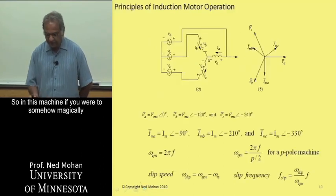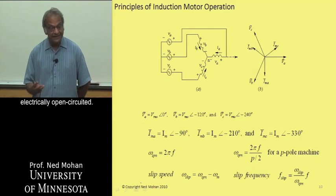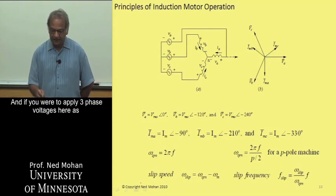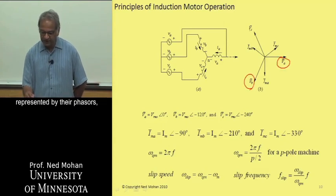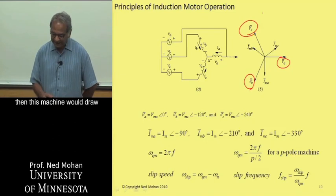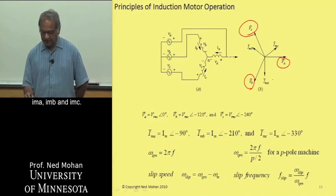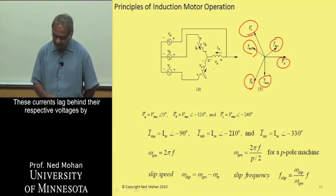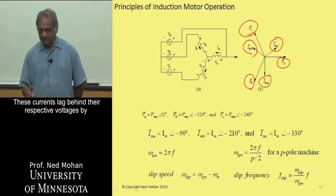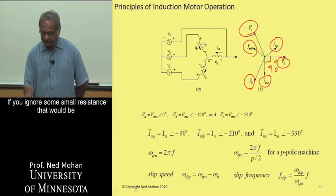So in this machine, if you were to, let's say, somehow magically cut the rotor bars, and so the rotor is there, but it's electrically open-circuited. And if you were to apply three-phase voltages here, as shown, VA, VB, and VC in steady state, represented by their phasors, then this machine would draw what is called magnetizing currents: IMA, IMB, and IMC. And it essentially looks like an inductor, so these currents would lag behind their respective voltages by 90 degrees, if you ignore some small resistance that would be there in each stator winding.